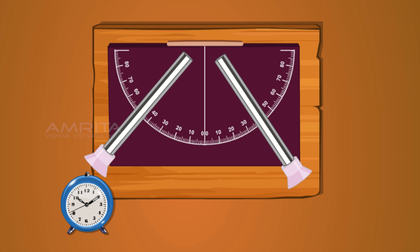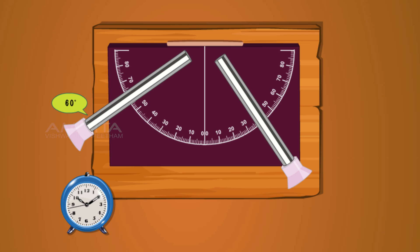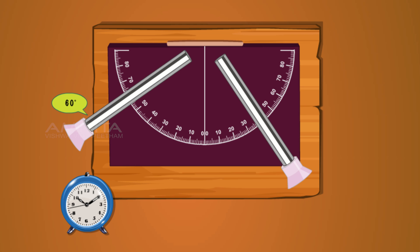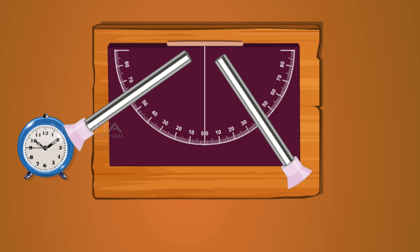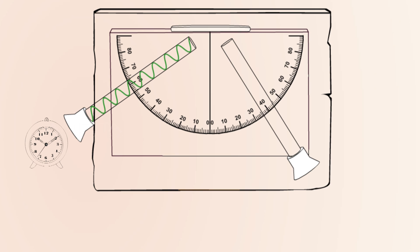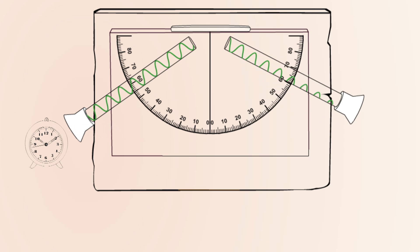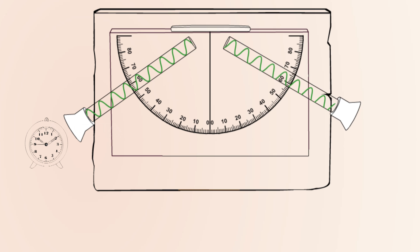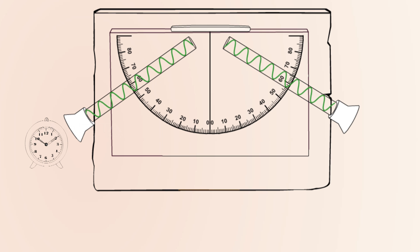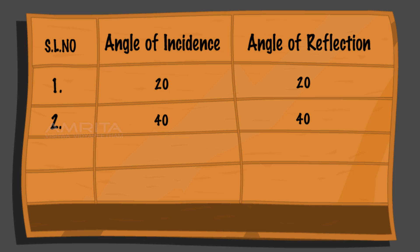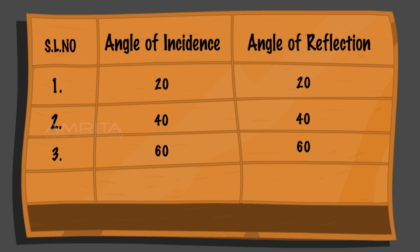Move the lower end of tube one at an angle of 60 degrees on the protractor and position the timer at the mouth of tube one. You can hear sound waves passing through tube one. Now move the lower end of tube two to catch the sound waves from tube one. Once the maximum volume is obtained through tube two, fix the tube at that angle. Note the angle of incidence and the angle of reflection. Both are 60 degrees.